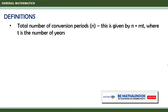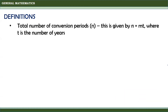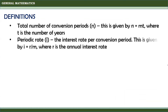Moreover, the total number of conversion periods, represented by N, is given by N equals M times T, where T is the number of years. Periodic rate, represented by i, is the interest rate per conversion period, given by i equals R divided by M, where R is the annual interest rate.